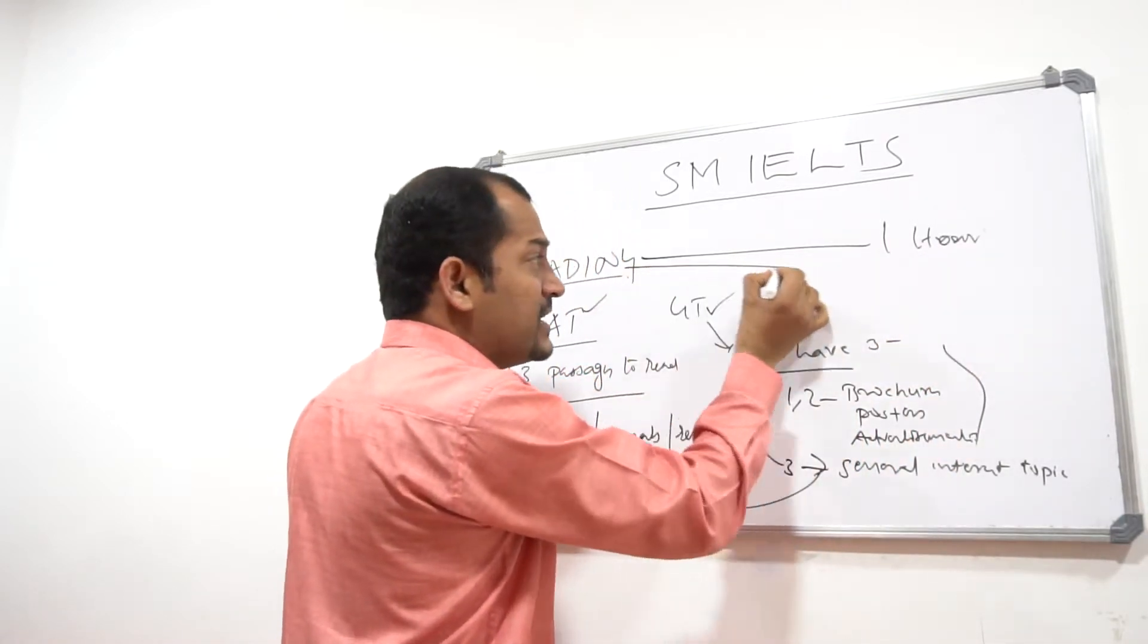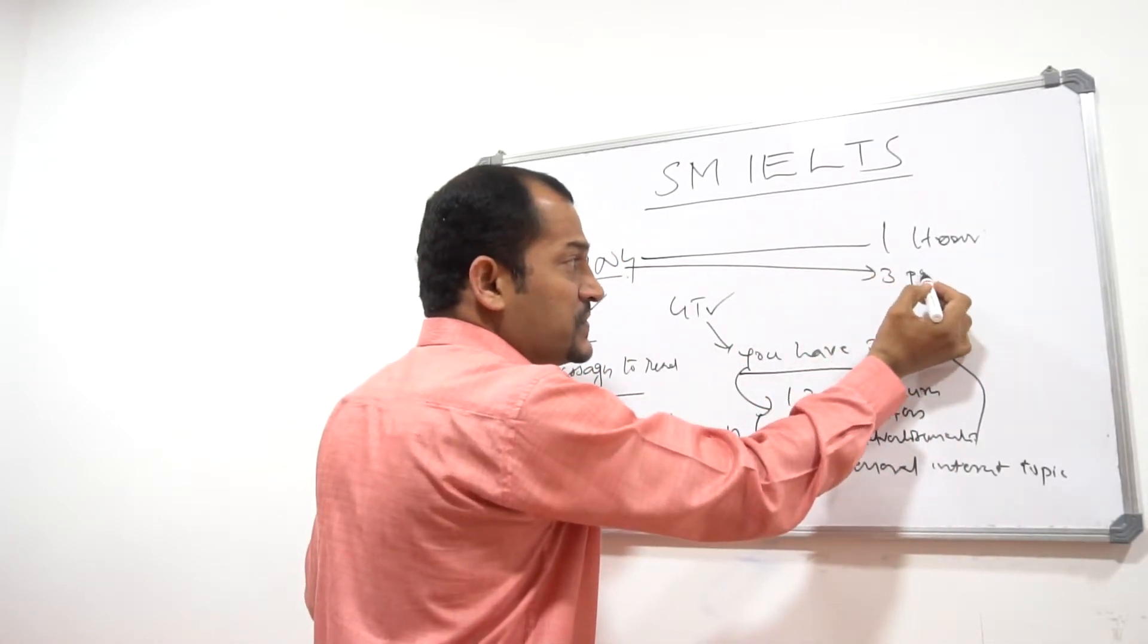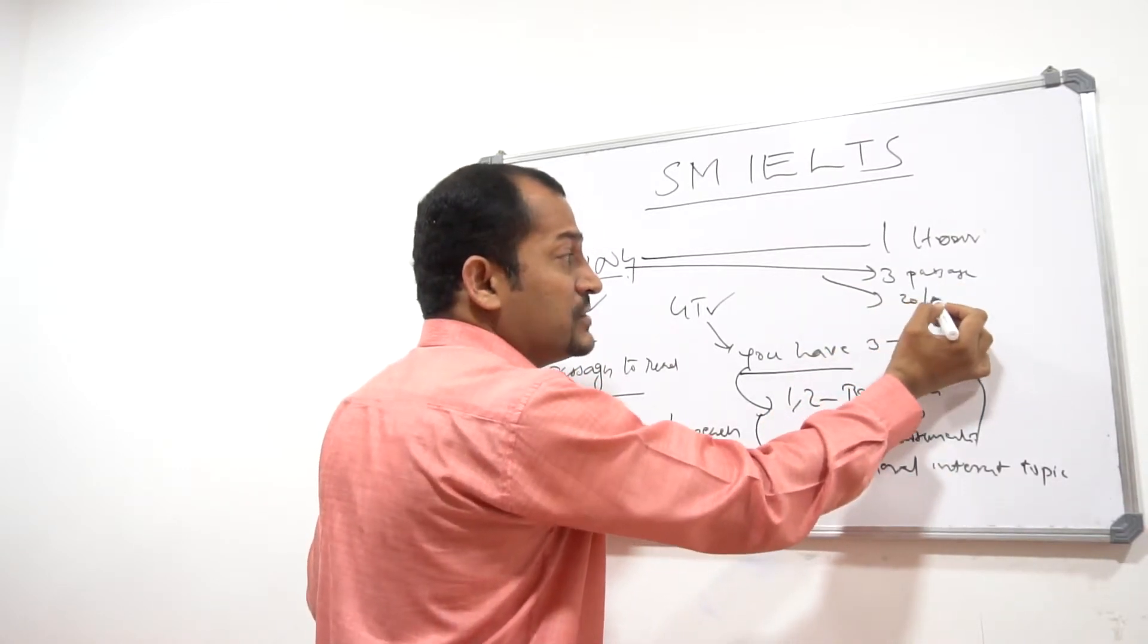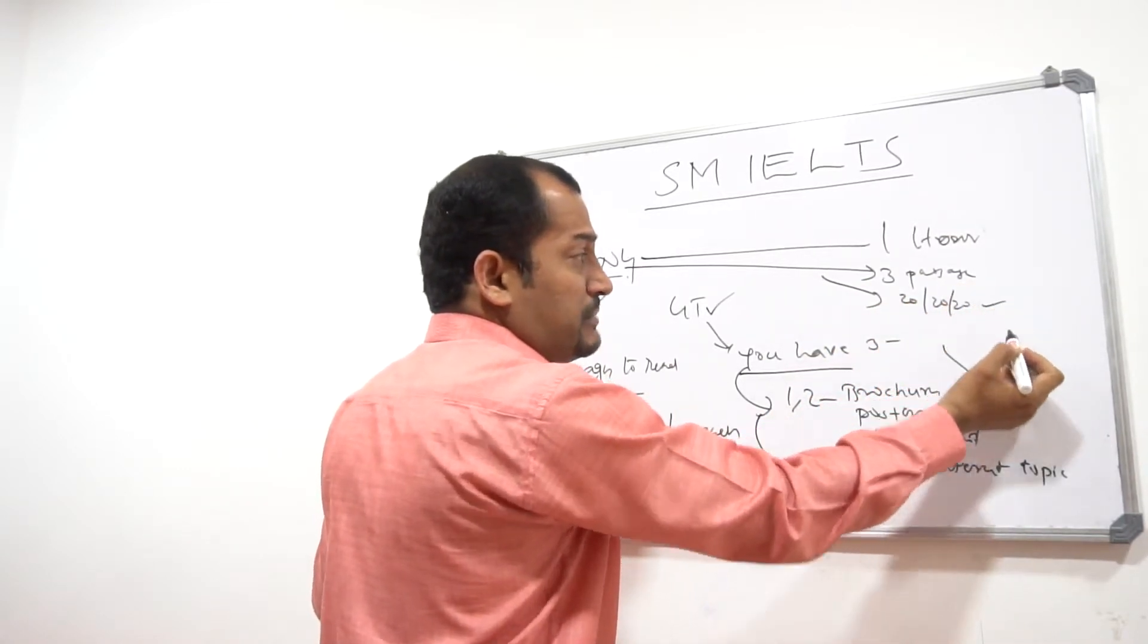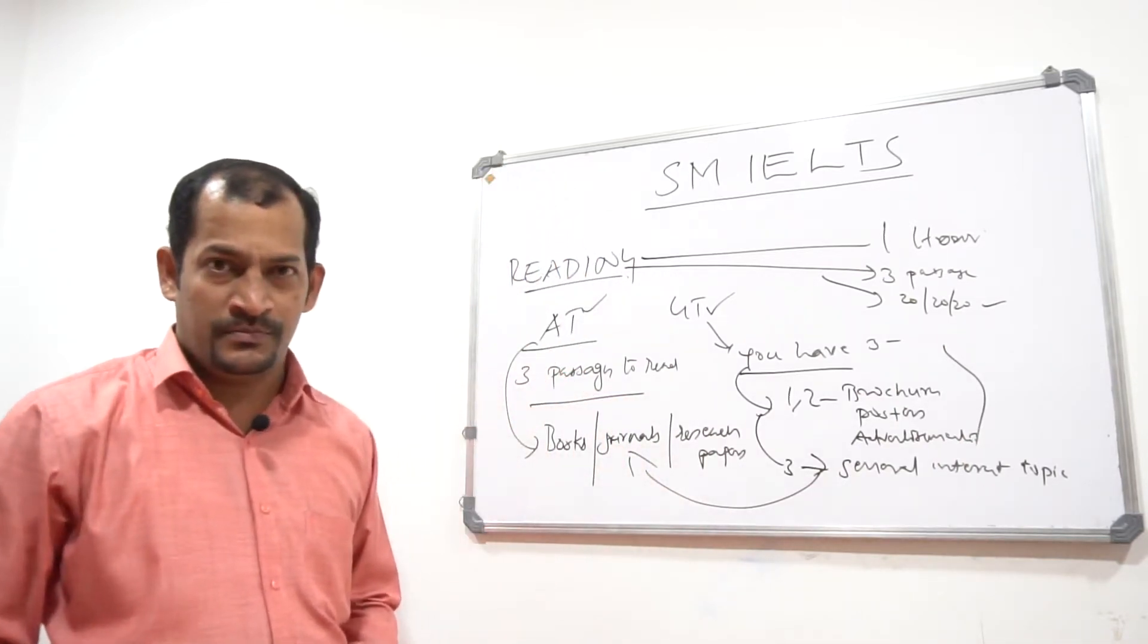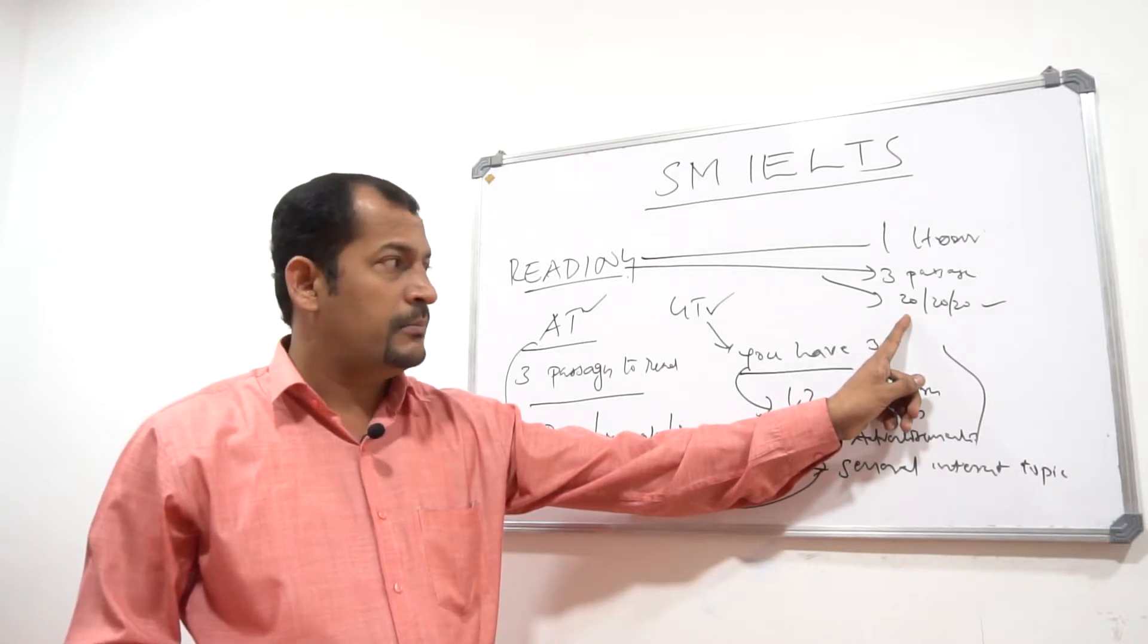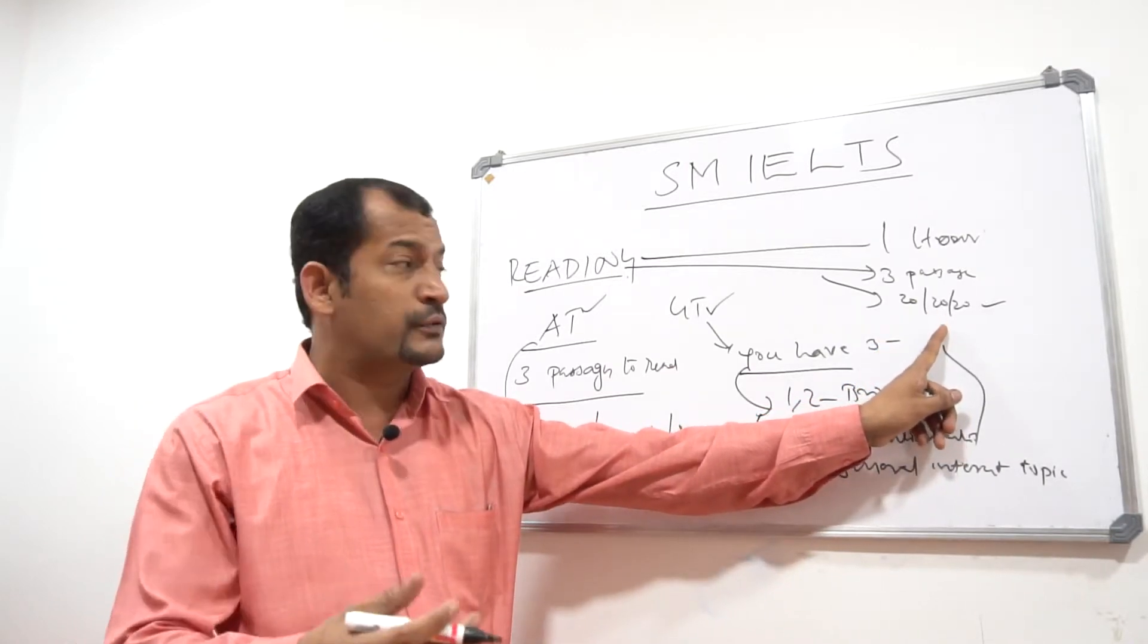Since you have three passages, you can divide the time intelligently into 20 minutes each. There is no problem if you use 25 minutes for the first passage, but you will have less time left for the remaining passages.